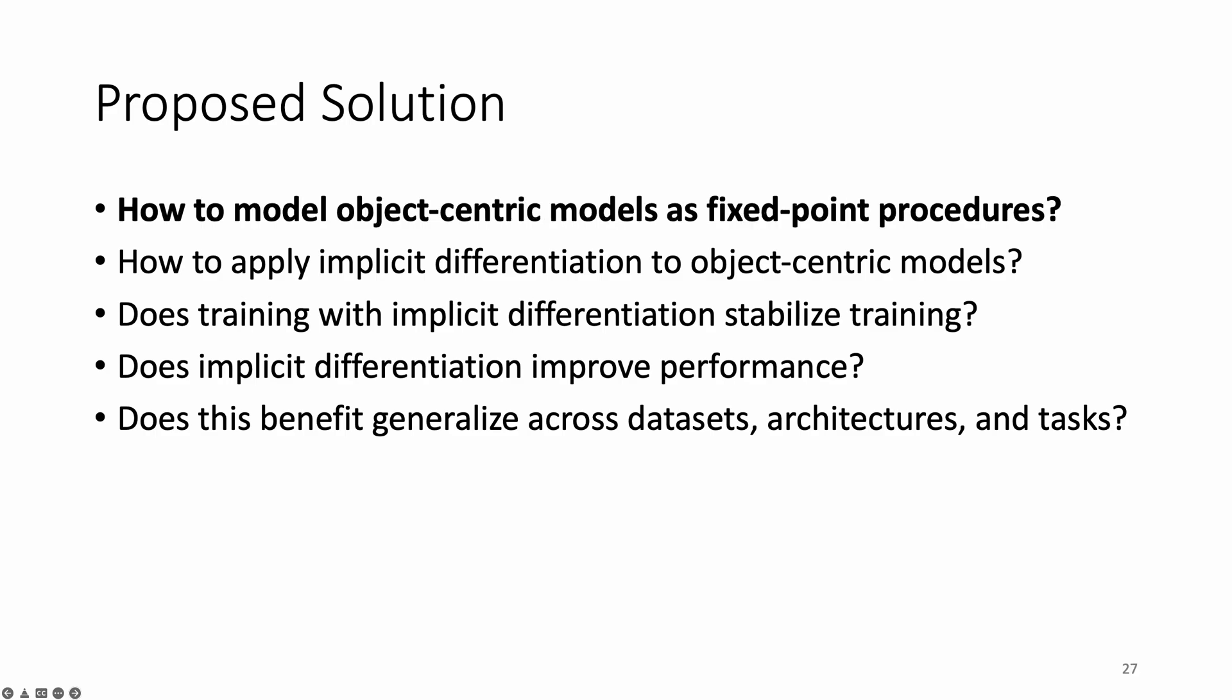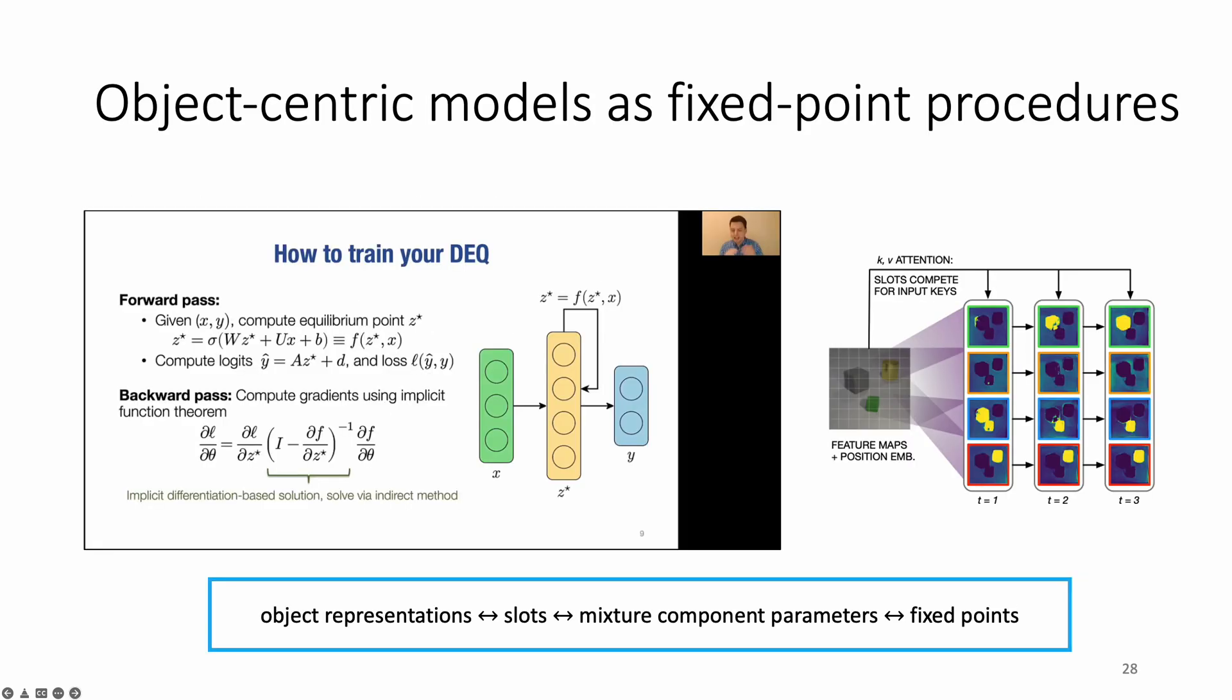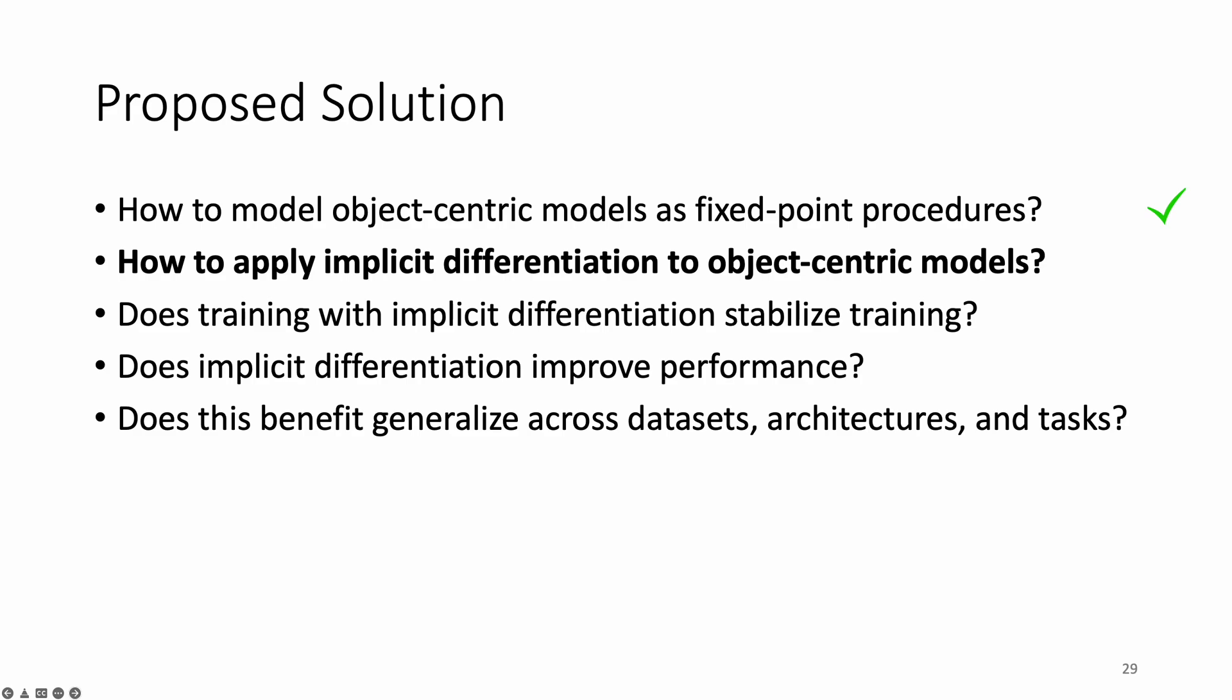The first question is straightforward. The object representations are the fixed points. In the context of slot attention, these fixed points are the slots, which approximate the parameters of the mixture components of the underlying mixture model. Now, I will talk about how we can apply implicit differentiation to object-centric models.